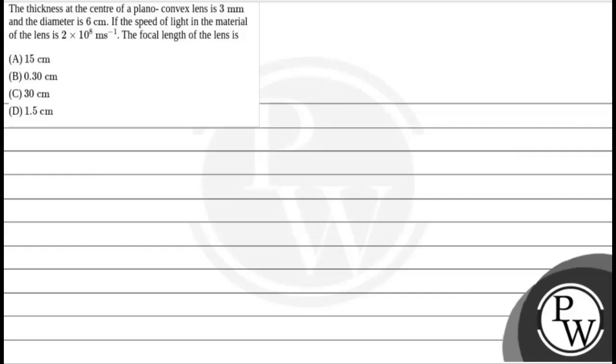Hello Bachchan, let's read the question. The question says, the thickness at the center of a plano-convex lens is 3 mm and the diameter is 6 cm. If the speed of light in the material of the lens is 2 × 10⁸ m per second, the focal length of the lens is.